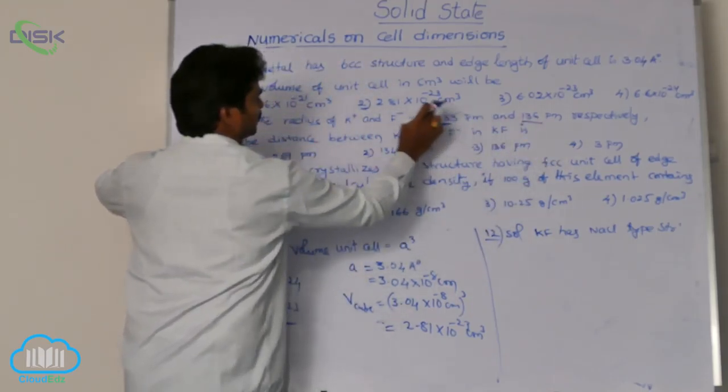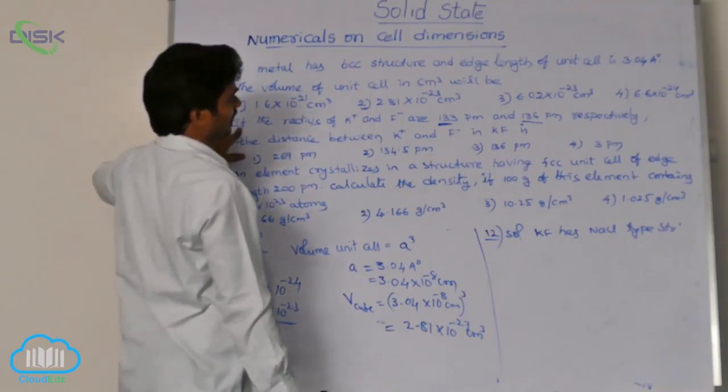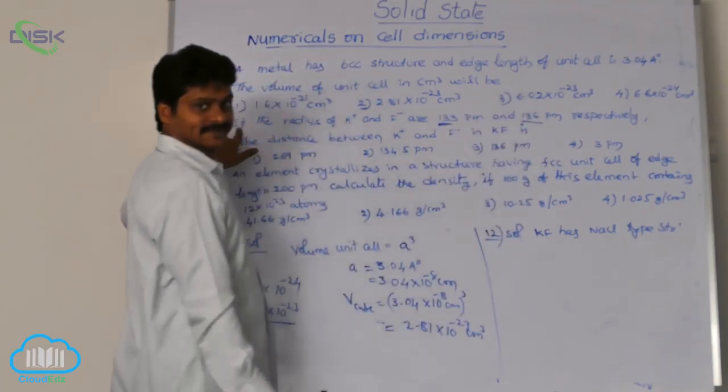One is for potassium radius 133. Similarly, for fluoride ion 136. Now, see here.